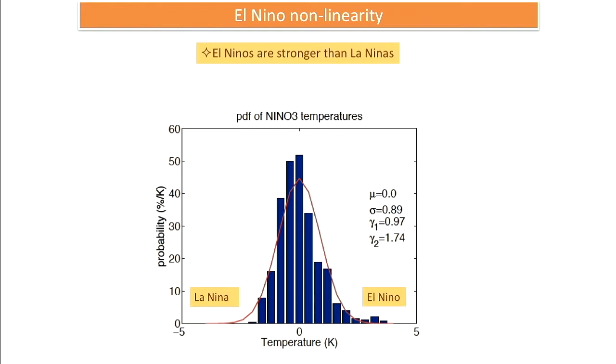If you look at the distribution of temperature values in the Niño 3 region — the equatorial Pacific — it has extreme values on the right-hand side, which we call El Niño, but it doesn't have matching extreme values on the left-hand side. You can quantify this with skewness, which is almost one. That means positive extremes are much more likely than negative extremes. This has been known for a long time — El Niño events are stronger than La Niña events. But in the last 10 years there has been much more research showing there's actually much more to the nonlinearity of ENSO than just this.